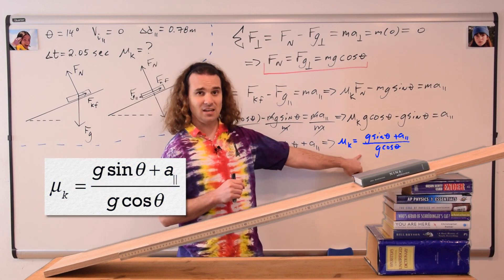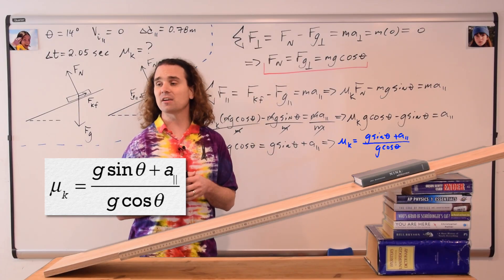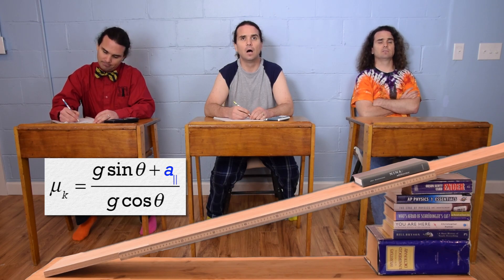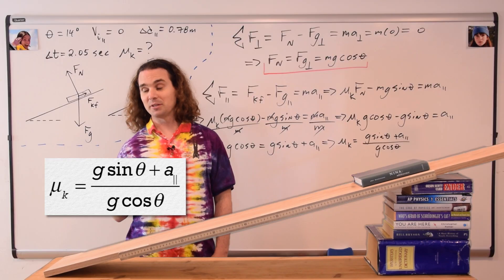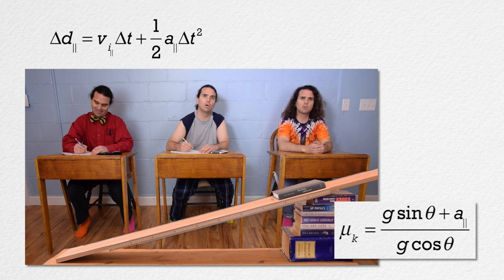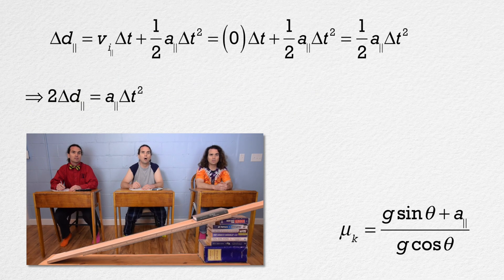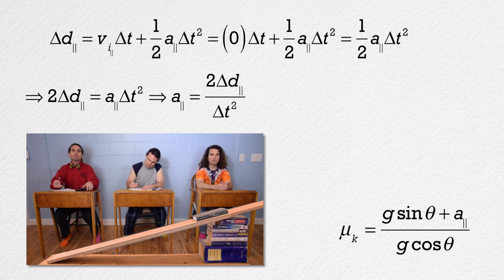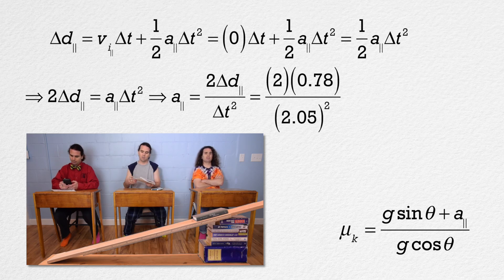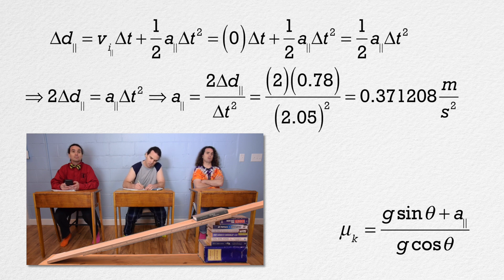The one variable we still need is the acceleration in the parallel direction. We can find it using a uniformly accelerated motion equation: displacement parallel equals initial velocity parallel times change in time plus one-half times acceleration parallel times change in time squared. The initial velocity is zero so that term cancels. Solving gives acceleration parallel equals two times displacement parallel divided by change in time squared. With numbers: two times 0.78 divided by 2.05 squared, which is 0.371208 meters per second squared. We can substitute that into the equation for the coefficient of kinetic friction.